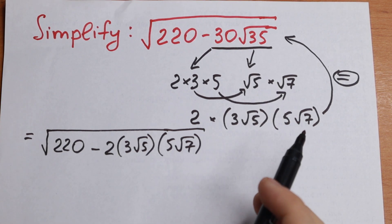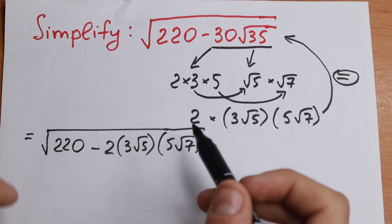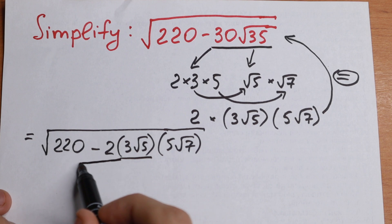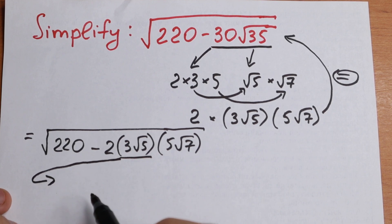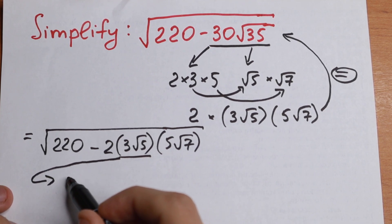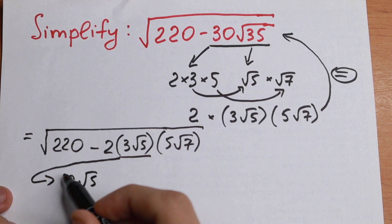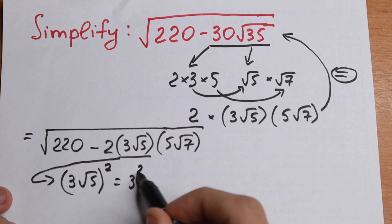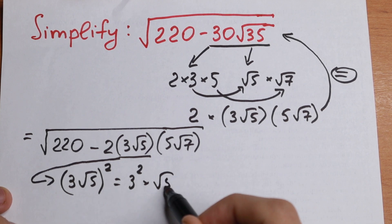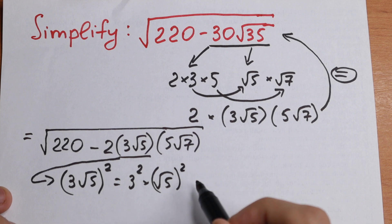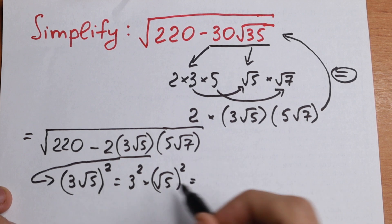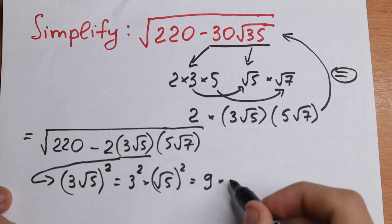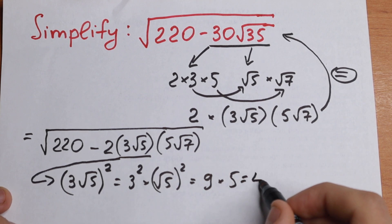So why did I write it this way? Take a look. If I raise 3√5 to the second power, I will have 3 squared times (√5)², which equals 9 times 5. As a result, we get 45. That is the first number.